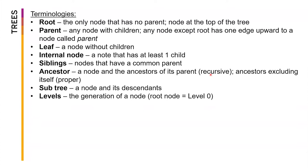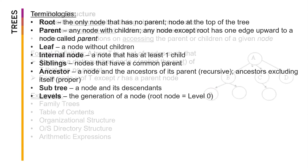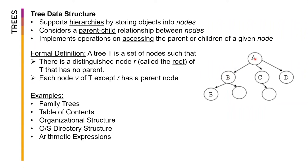But if we want the proper definition of ancestor, it's only the ancestors excluding the node itself — so that would be B and A only for node E. The reason this happens is related to the structure of the object when implementing trees. Recursively, we start at E, and it has to access itself first before it can access its ancestors. The proper strict definition refers only to B and A.